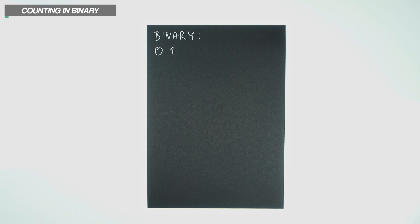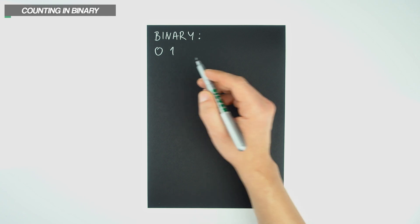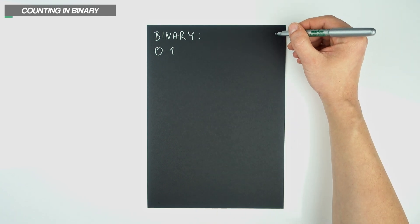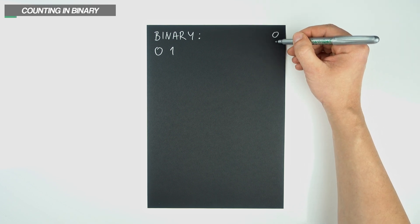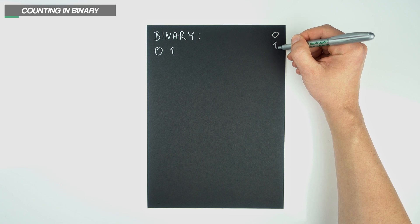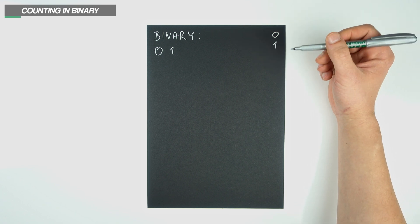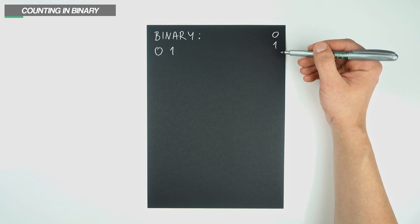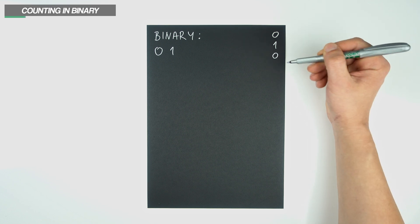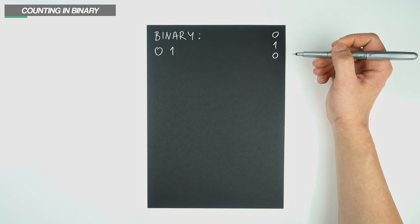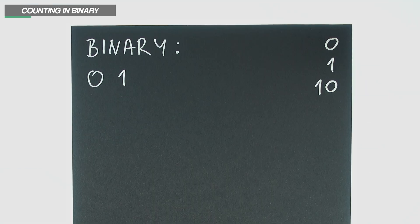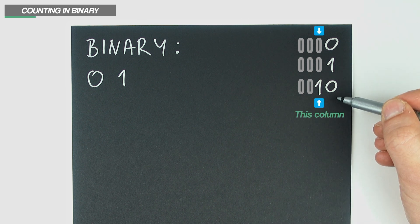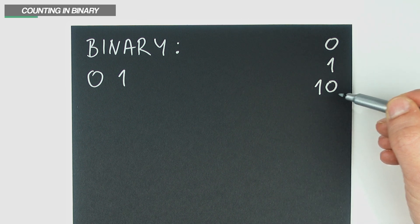The same rules apply when counting in binary, only here we just have two digits to work with: 0 and 1. Just like we did earlier, we start with a digit that represents the smallest value, which is 0, and we make our way to the one that represents the highest, which is 1. This time we've run out of digits much sooner, so in order to continue, we reset the rightmost column to 0 and increase the digit to its left by an increment of 1. Just like earlier, we can imagine an infinite amount of invisible zeros to the left, which is why we can increase this column to 1, and that's how we get the number 10.